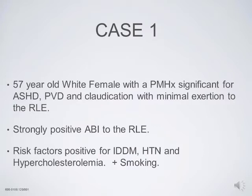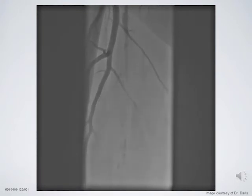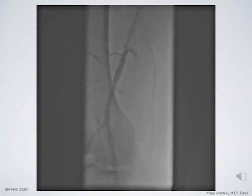Case one: a 57-year-old white female with a medical history of coronary disease and peripheral disease with claudication on minimal exertion to the right lower extremity, Rutherford class III, significantly positive ABI, and risk factors of diabetes, hypertension, hyperlipidemia, and smoking. The first angiogram shows a very severely diseased, proximally, with a total occlusion of the vessel, with vessel patency seen in Hunter's Canal just above the popliteal segment via collaterals.